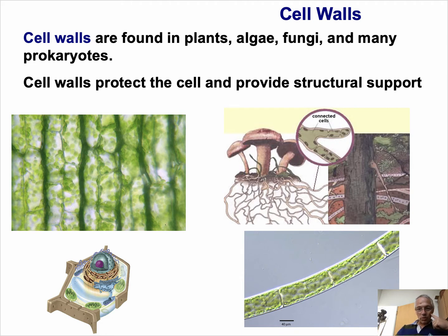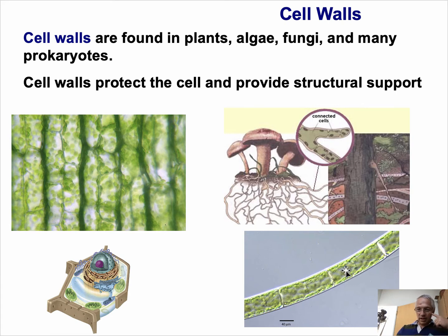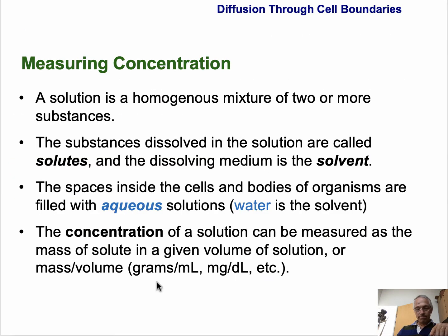We're going to look at some cells in class, including plant cells, where you'll be able to see their cell walls. In some cases, cells are very regular and boxy in shape — this is a colonial algae where the cells look very much alike one after another. Fungi also have cell walls, made of a slightly different substance than plants.